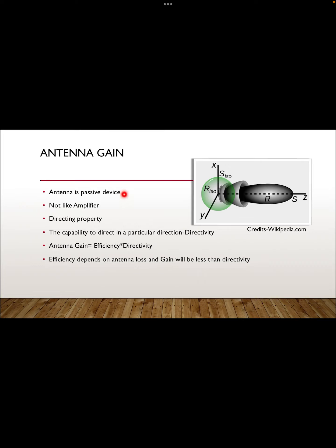So why are we calling it antenna gain? Consider the case of an isotropic antenna. This green circle represents that if we have an isotropic antenna here, it will be radiating power equally in all directions. That is the case of an isotropic antenna, which is an ideal antenna.